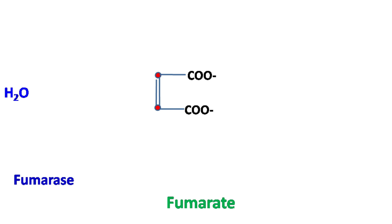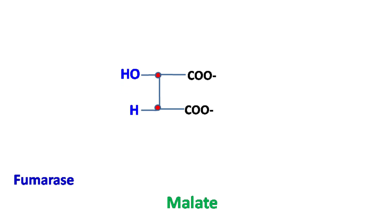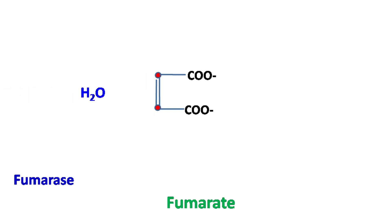The enzyme fumarase then converts fumarate to malate by the addition of a water molecule. This is again a reversible reaction.